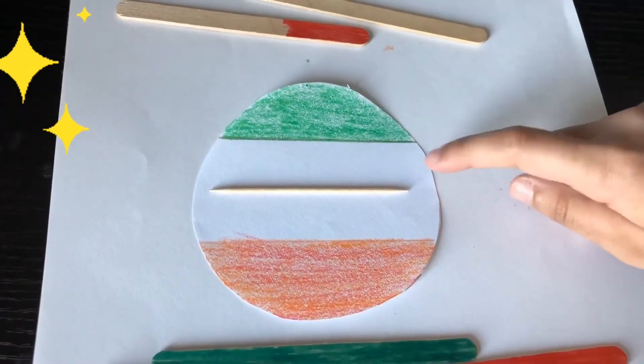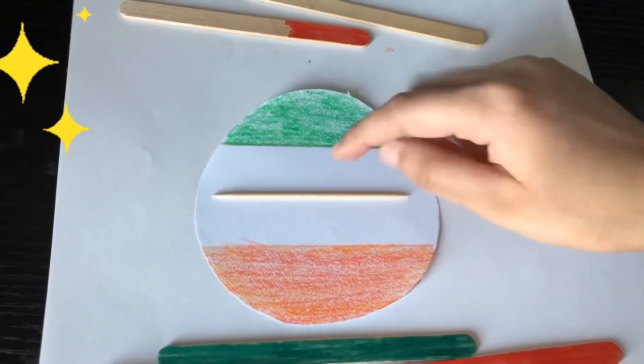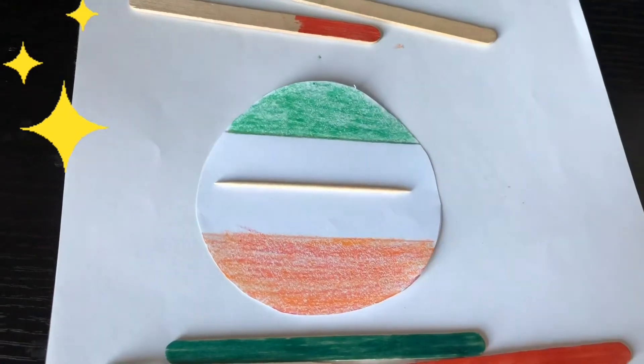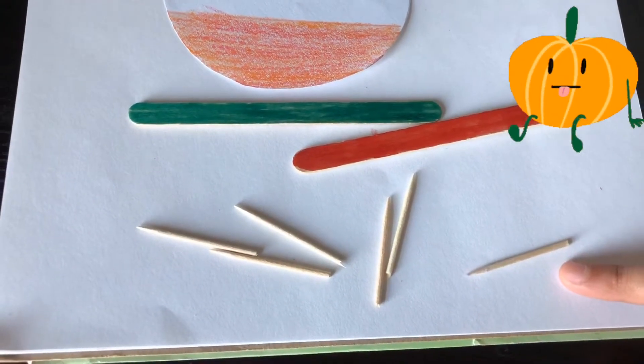So you need to get the piece and get it with glue and stick it to this circle. Now break the remaining ones into half.